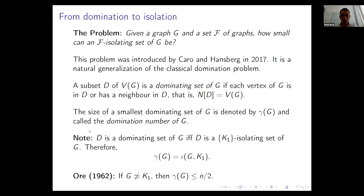The size of a smallest dominating set of G is denoted γ(G), the domination number. The first observation is that isolation is a generalization of domination: D is a dominating set of G if and only if D is a K1-isolating set of G.